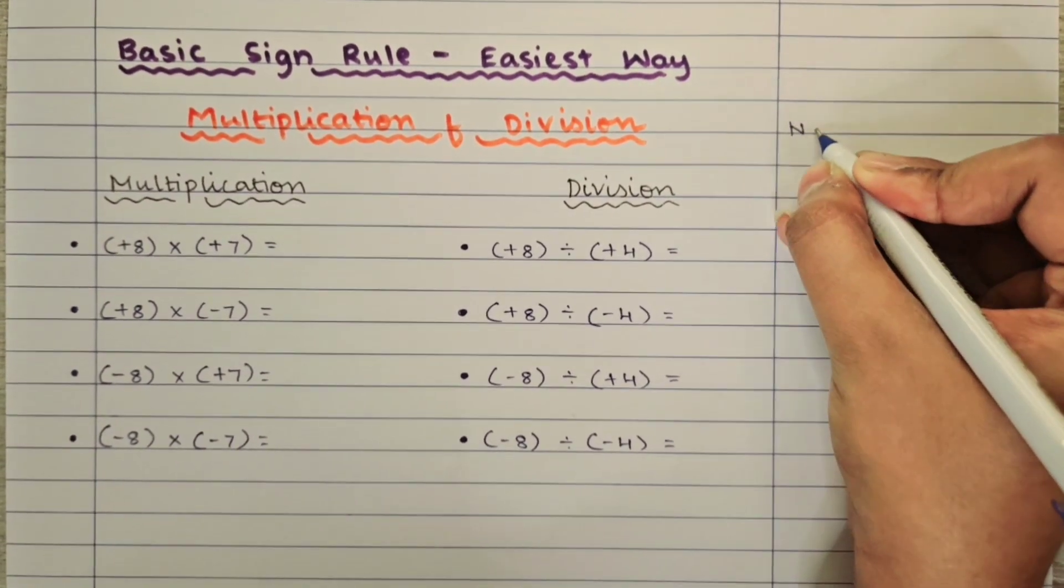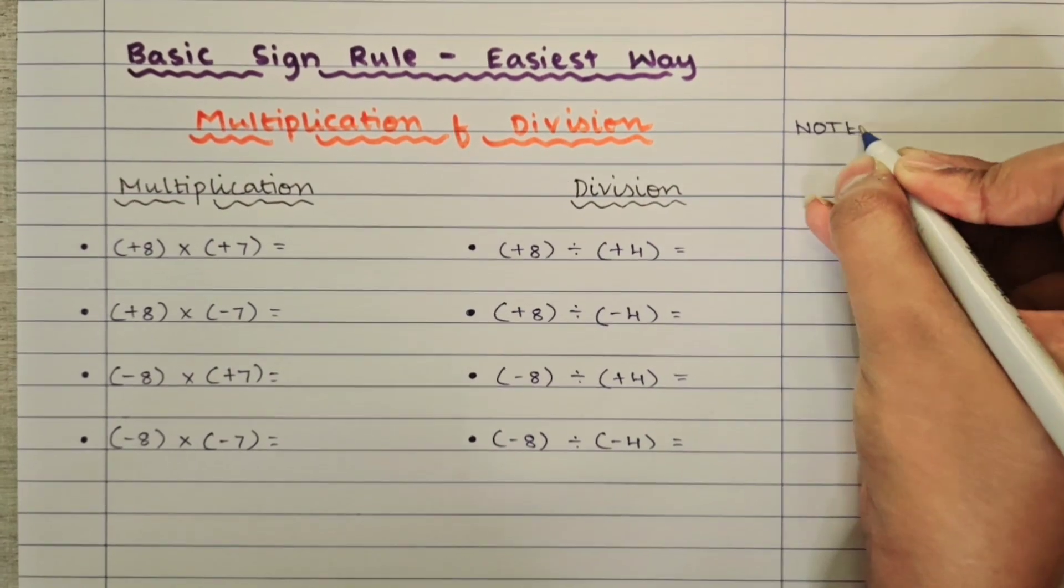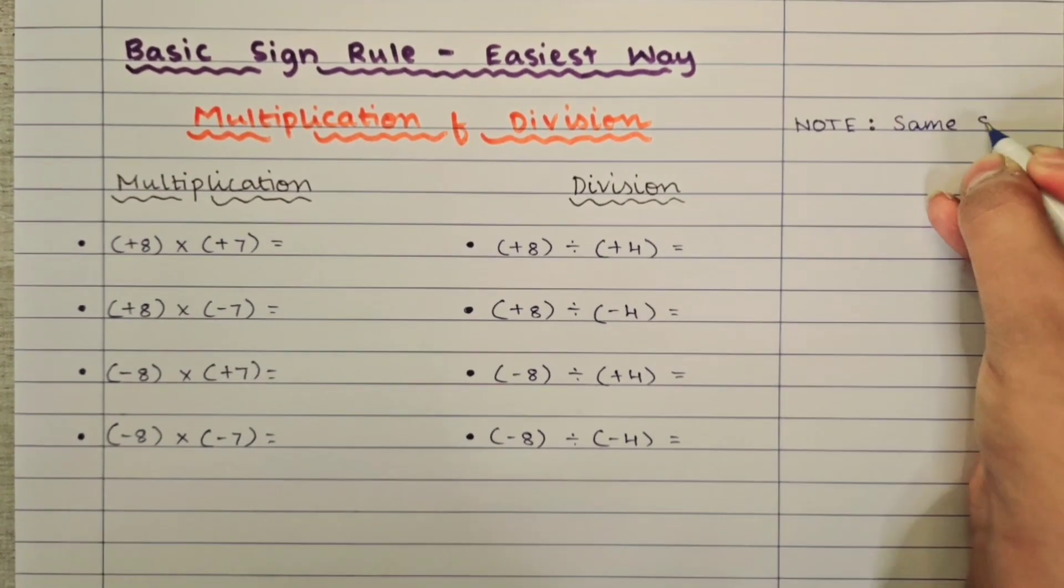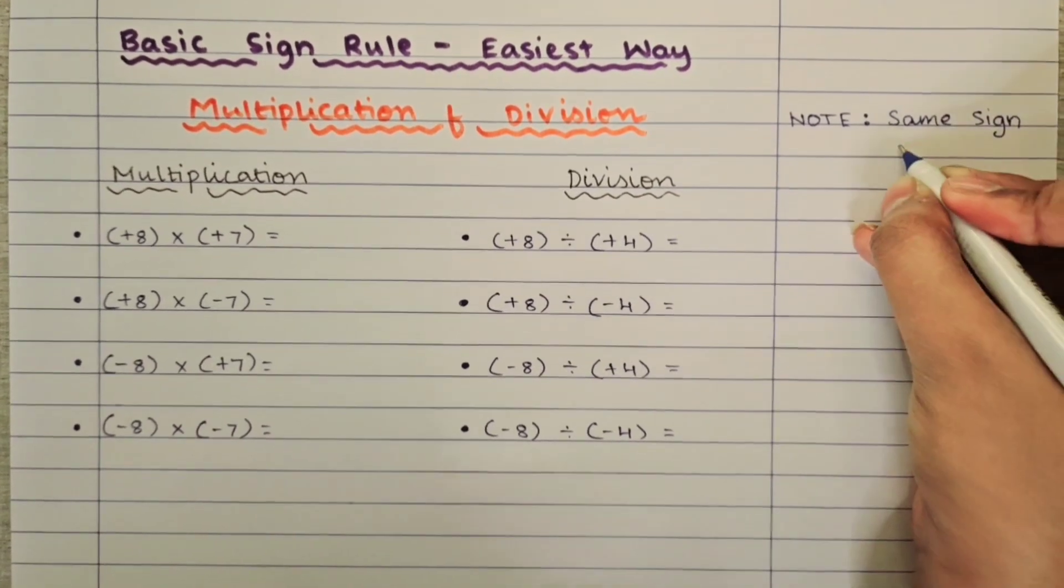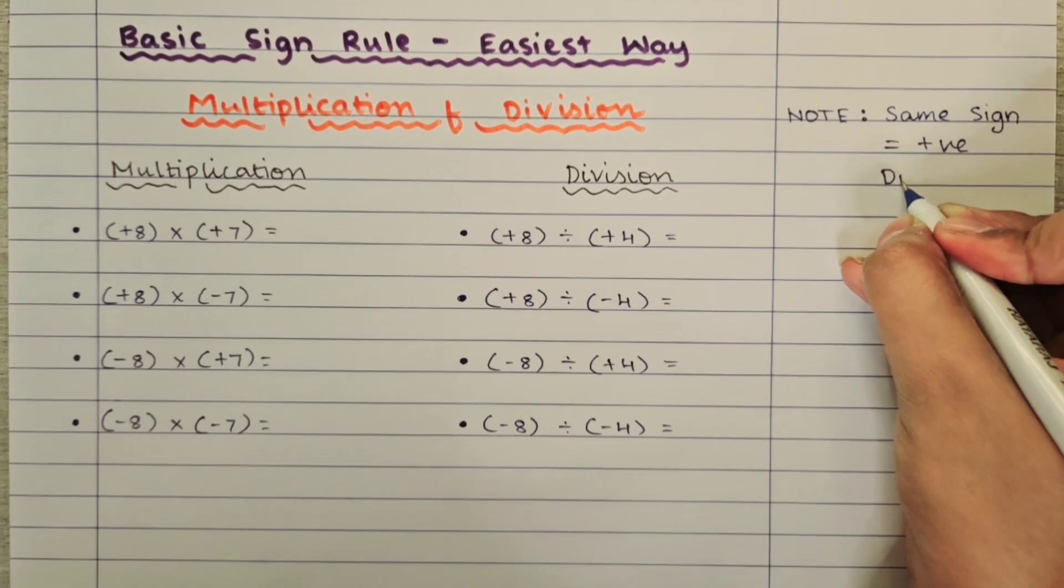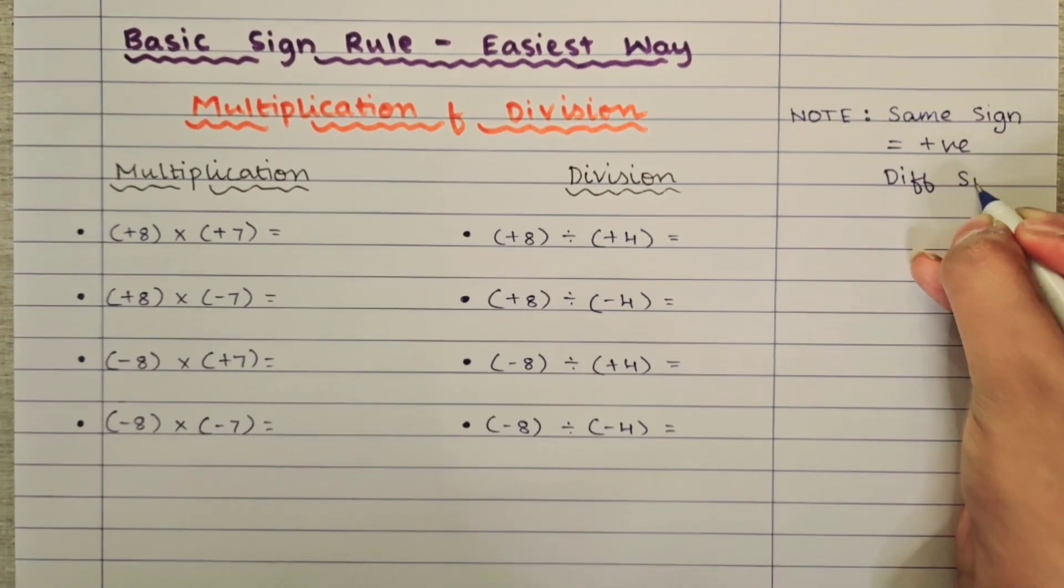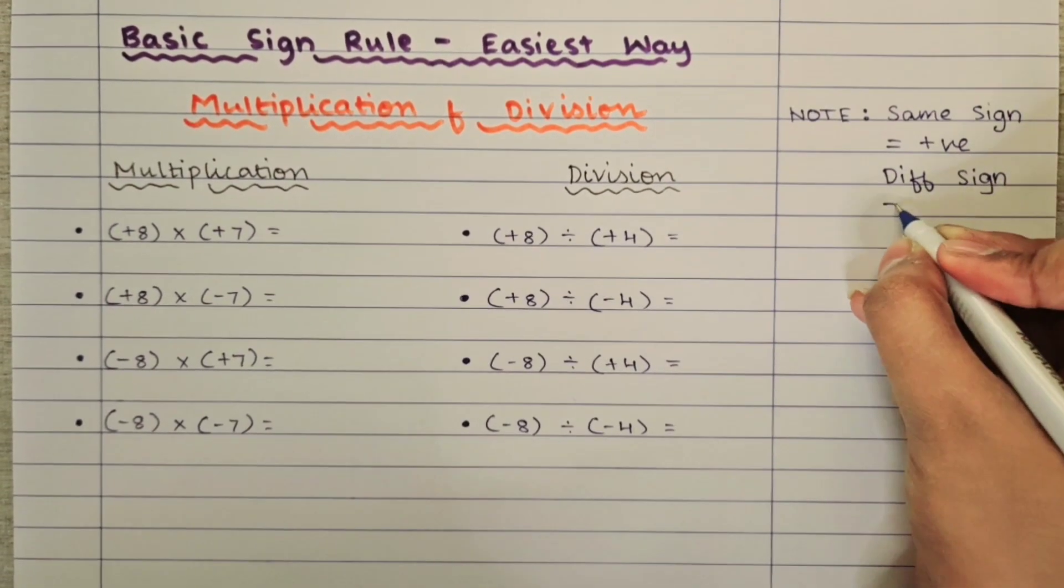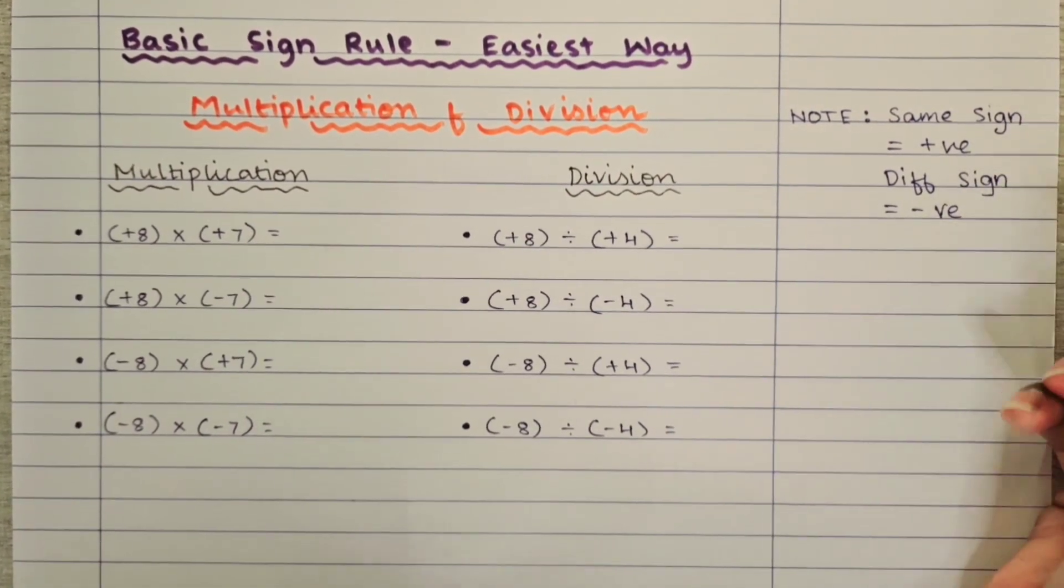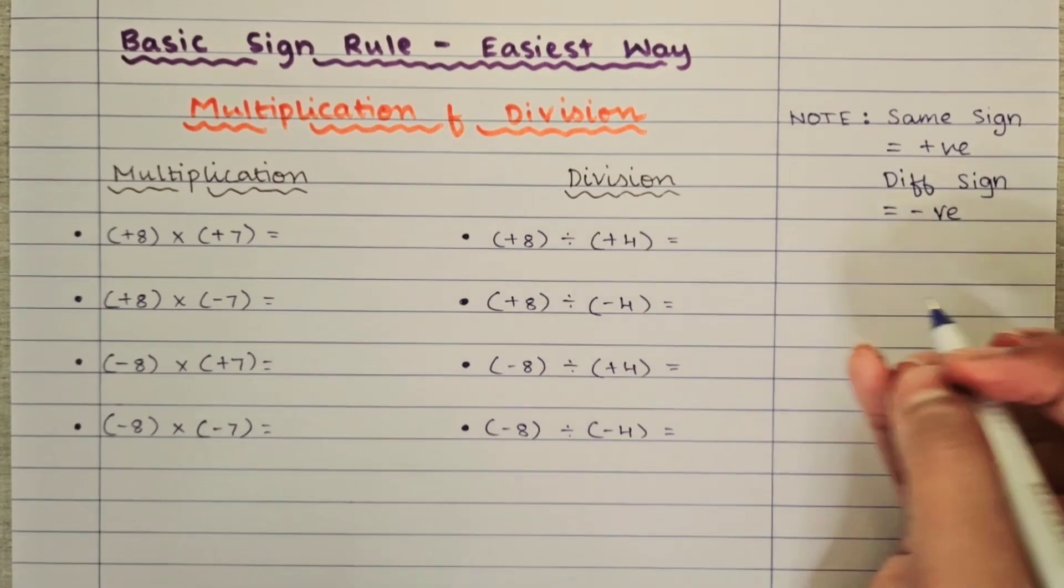First we have to note a point for both multiplication and division that when two digits have the same sign, it will be a positive number. When it has a different sign for both digits, then it will be a negative number. Just remember this. Using this we are going to solve the sums.